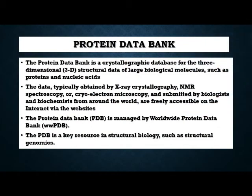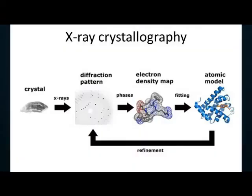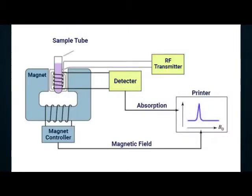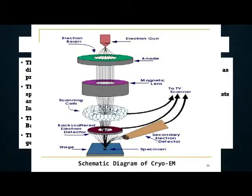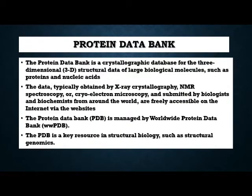The protein data bank is a crystallographic database that provides the three-dimensional structure of large biological molecules such as proteins and nucleic acids. These structures are obtained by using X-ray crystallography, NMR spectroscopy, or cryo-electron microscopy, submitted by biologists and researchers from around the world and freely accessible on the internet via the rcsb.org website. The protein data bank is under the action of the worldwide protein data bank that came into action in 2000.